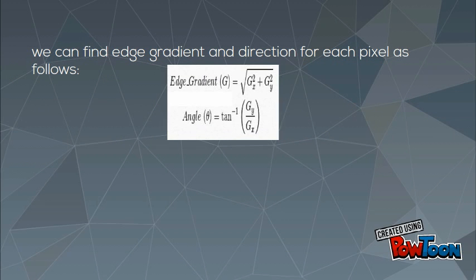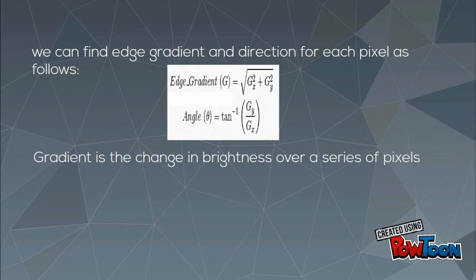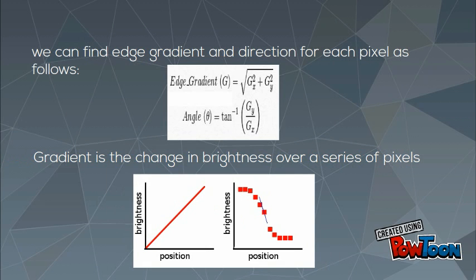We can find the edge gradient and direction for each pixel as follows: the gradient is the change in brightness over a series of pixels.